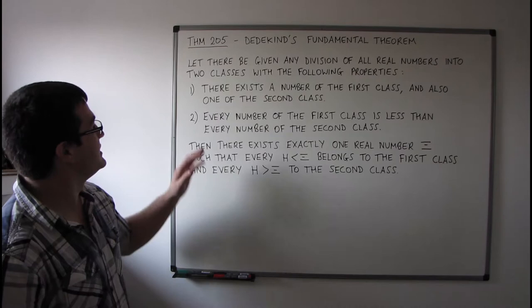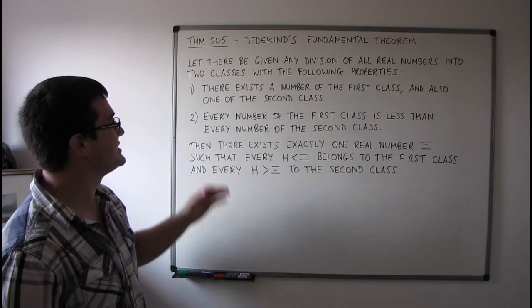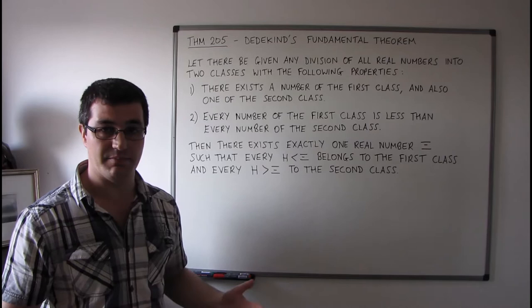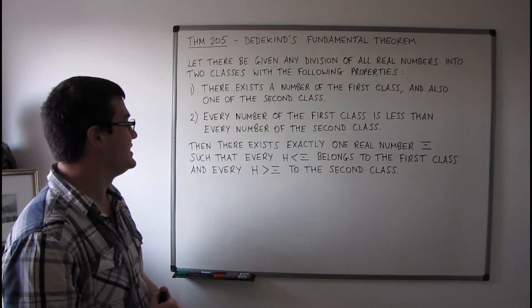The theorem simply says: let there be given any division of all real numbers into two classes with the following properties. The first property is that there exists a number of the first class and also one of the second class — in other words, both classes are non-empty. The second property is that every number of the first class is less than every number of the second class.